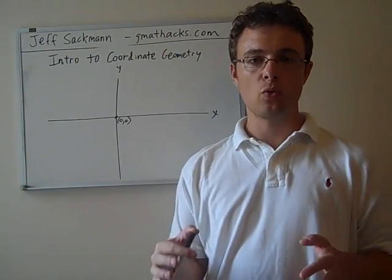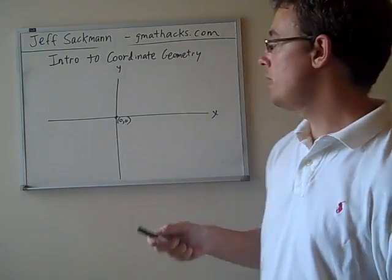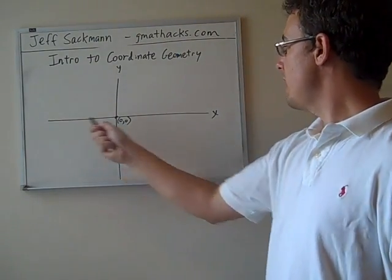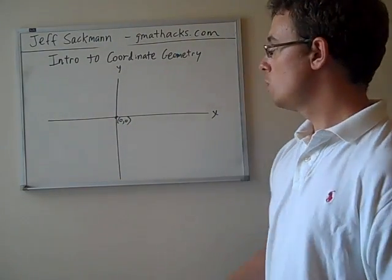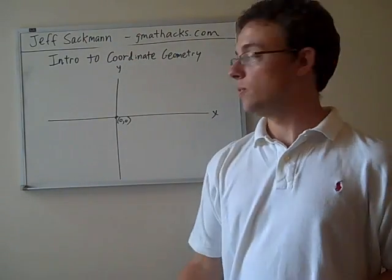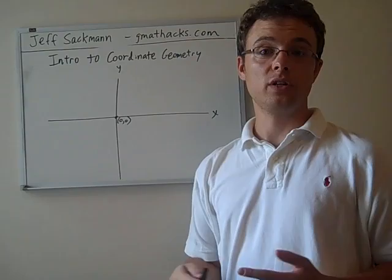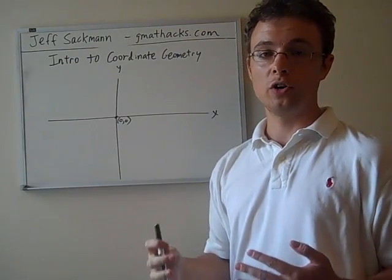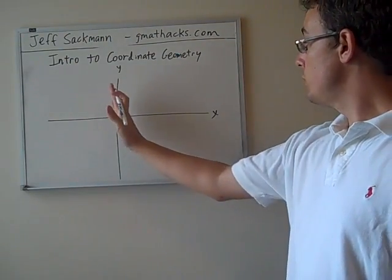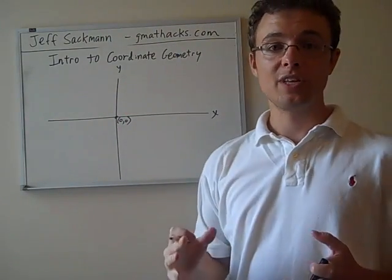The very most basic of coordinate geometry is the two-dimensional x-y plane. We have an x-axis going from left to right, a y-axis going up and down, and the point where they intersect called the origin, which has coordinates of 0, 0. As we go to the right or up, the numbers get bigger.